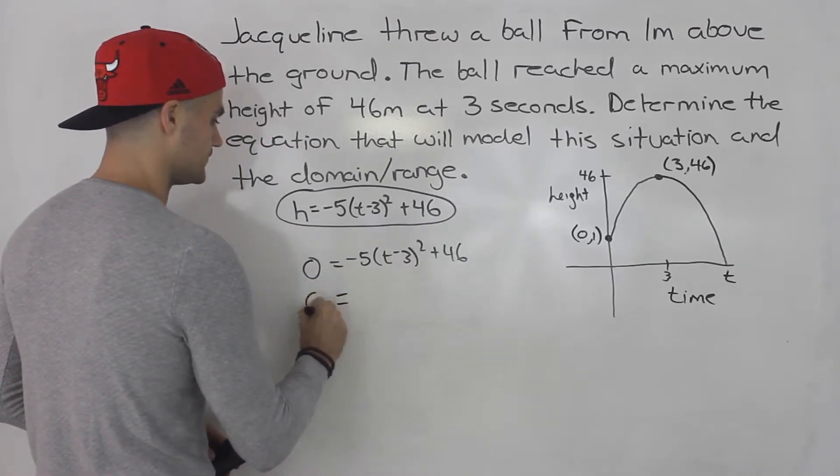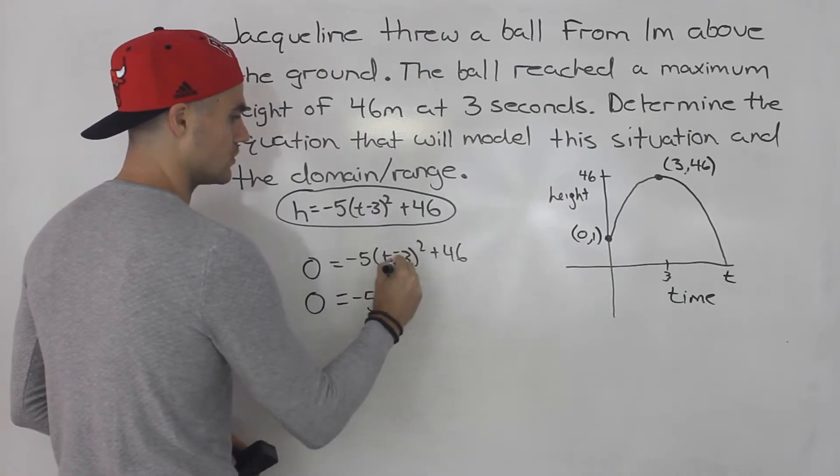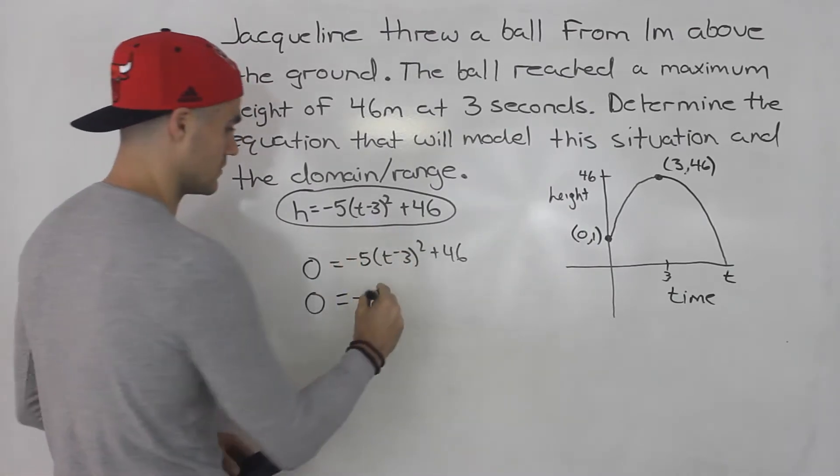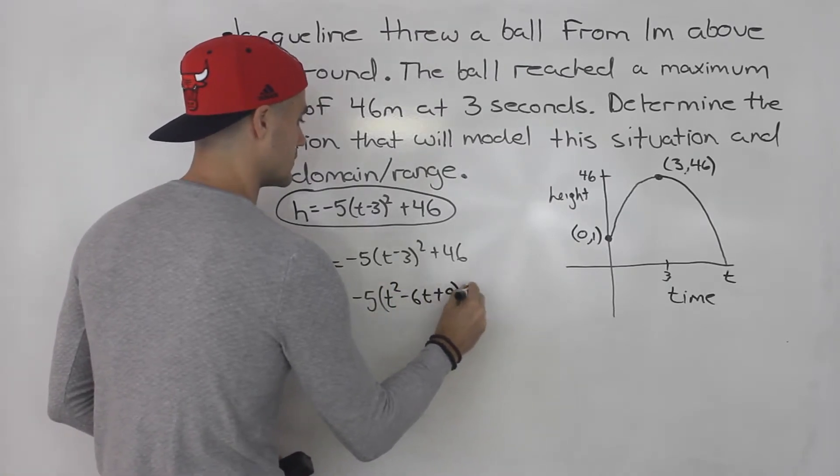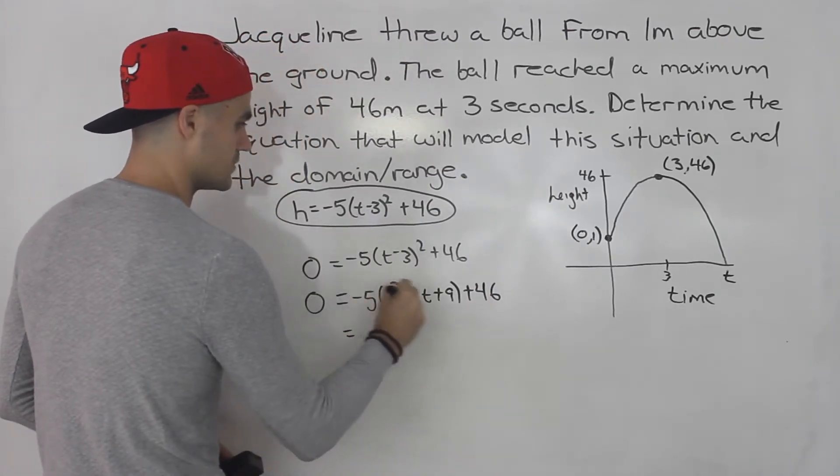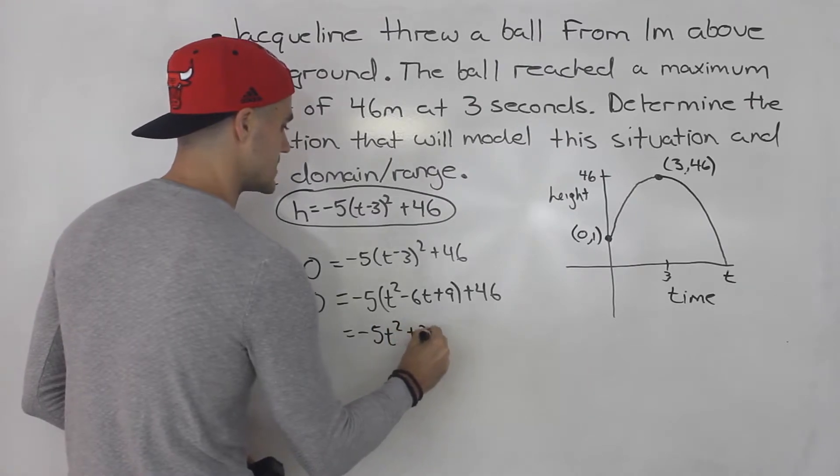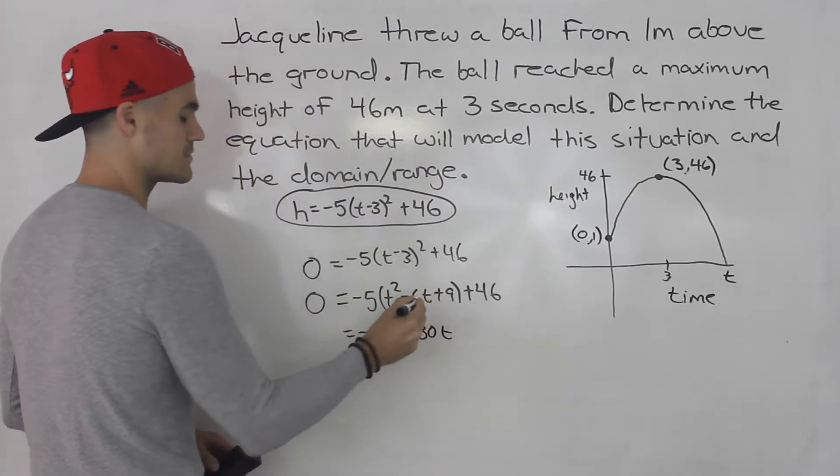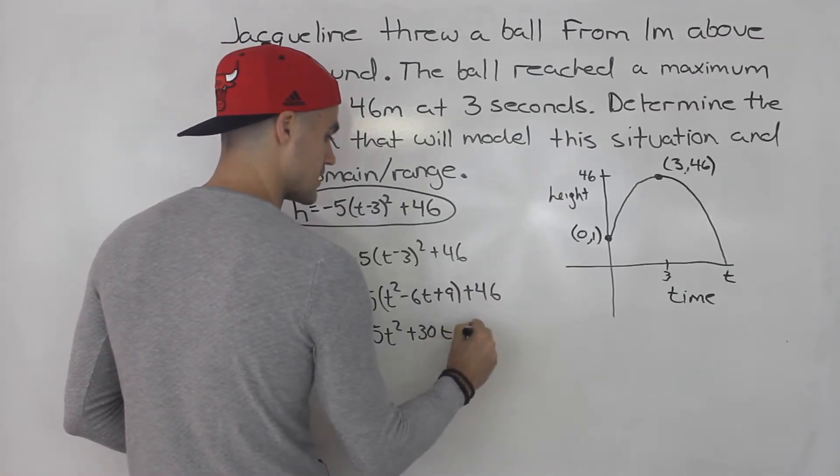What I'm actually going to do is expand everything. So if I FOIL (t - 3)² out, I'd end up with t² - 6t + 9. This is going to be plus 46. So distribute the negative 5 in. So I'll have -5t² + 30t. Negative 5 times 9 is negative 45 plus 46. That gives us positive 1.